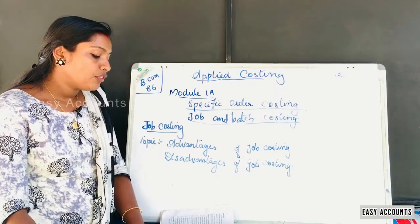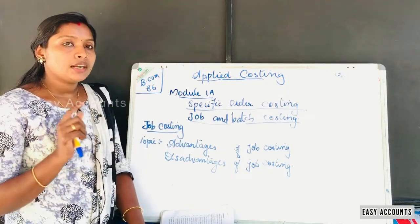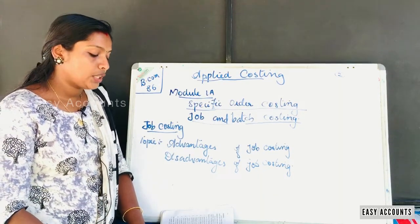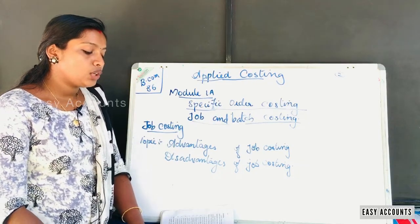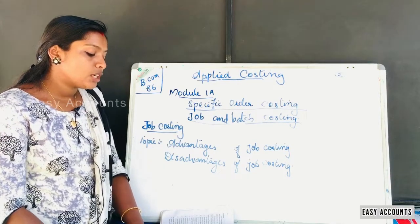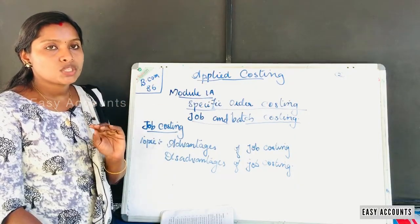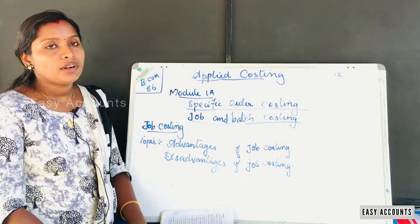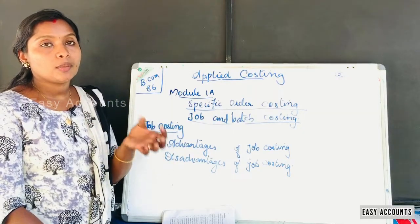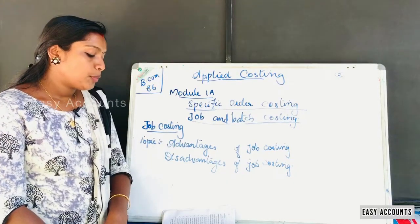The profitable jobs are distinguished. One job is treated as a separate cost unit. The profit of each job can be correctly ascertained, and the profitable job can be distinguished from the unprofitable one. That is the advantage of job costing.